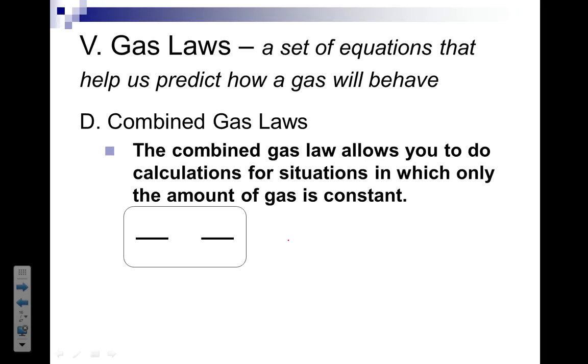the volume constant, or the temperature constant. So you could drop it out. But the combined gas law combines all three of the previous formulas. And so we get P1 times V1 divided by T1 equals P2 times V2 divided by T2.